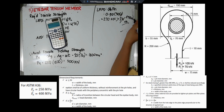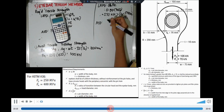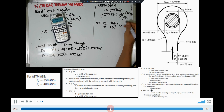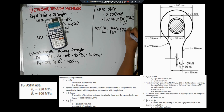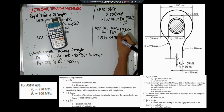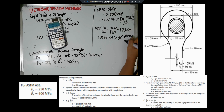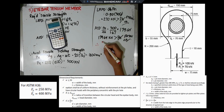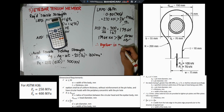For ASD, Pn divided by the safety factor Ω = 1.67 equals 179.64kN, which is greater than Pa = 175kN. We can conclude that the I-bar member is adequate to carry the given dead load and live load.